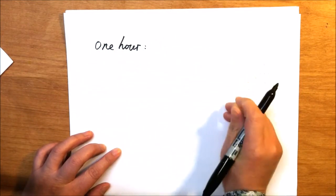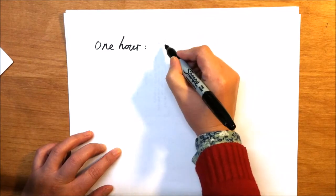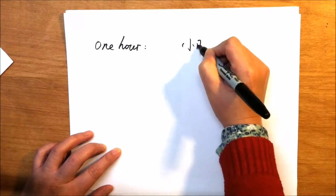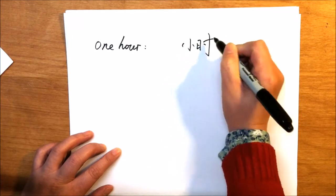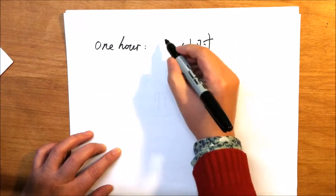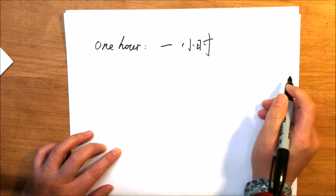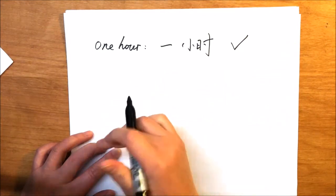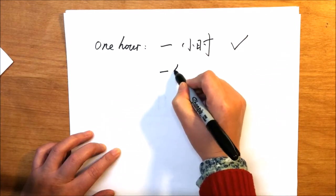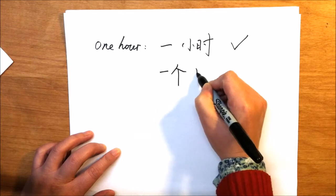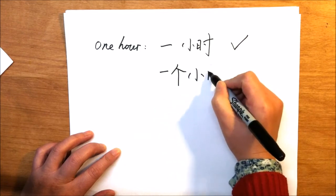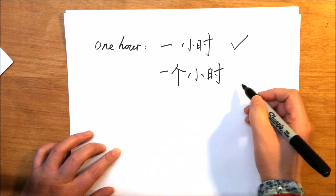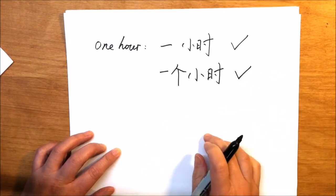One hour will be 一小时, that's correct. Or we can add the measure word 一个小时, that's also correct.